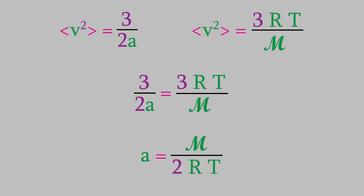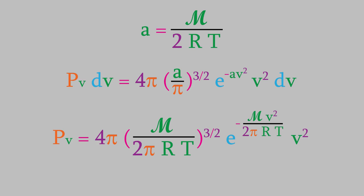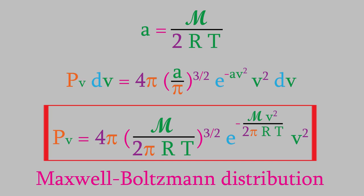But wait — in the previous video we already determined an expression for the average squared velocity. If we set these two expressions equal to each other, the temperature and molecular mass of the gas are both easy to determine, so the only variable we don't know is a. Solving for a, we get that a is just equal to the molecular mass over 2 times RT. So we finally have an expression for a, and just as we expected, it depends on both temperature and the molecular mass. If we plug this into our equation for the velocity distribution, here's what we get. This is the Maxwell-Boltzmann distribution — a very important result — which tells us the probability that a gas molecule will have any given velocity. All we need to know is the temperature and the molecular mass. It's one of the most significant results in the field of statistical thermodynamics.